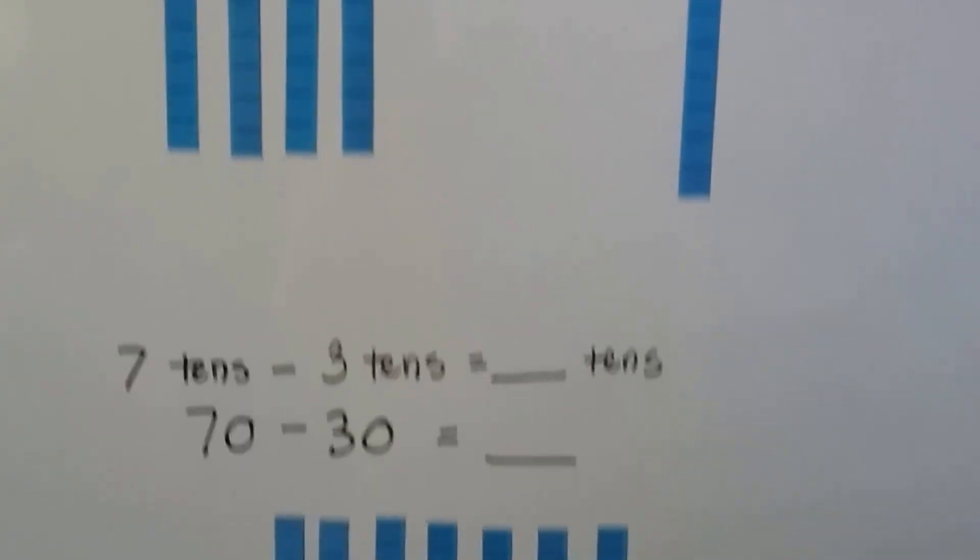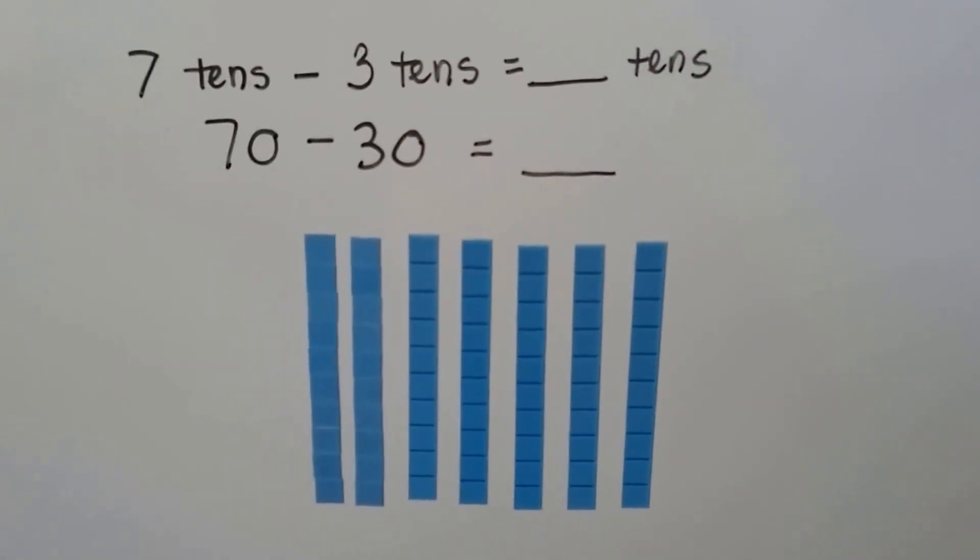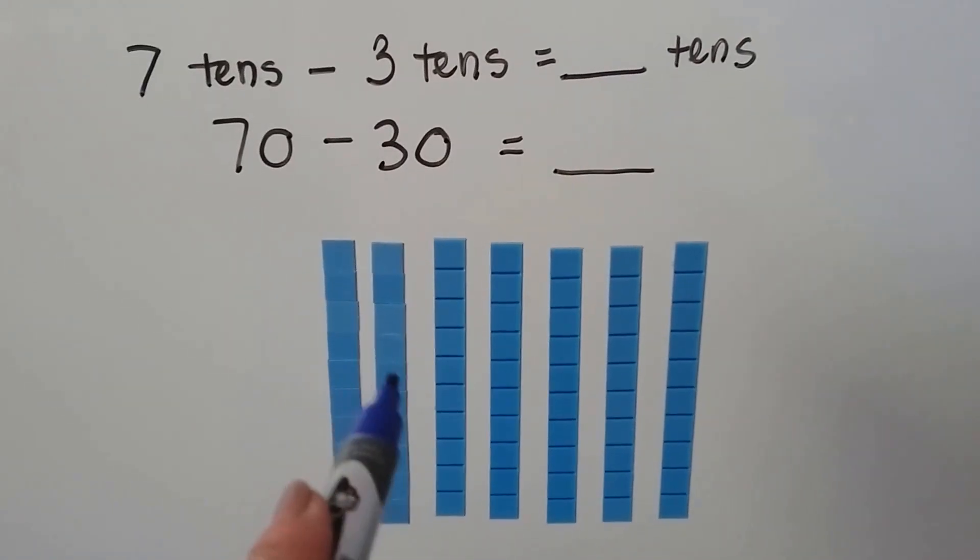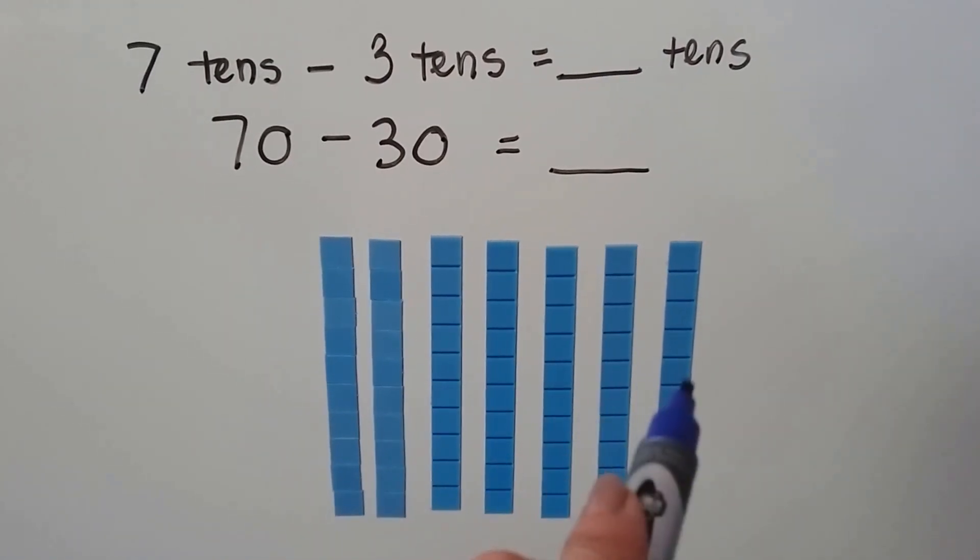Let's try one more. We have seven tens minus three tens. We have seven tens here. One, two, three, four, five, six, seven.